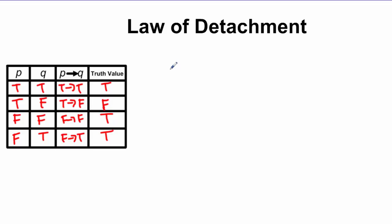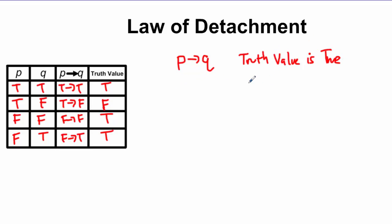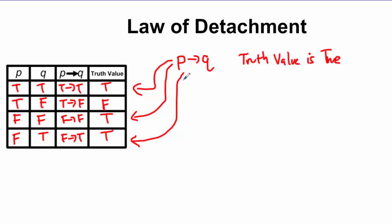The law of detachment says this: let's say I tell you I'm thinking of a conditional and it has a truth value of true. If I look at my truth table, there are three cases where your conditional can be true — this case, this case, or this case. So there are three different cases when your conditional can be true.